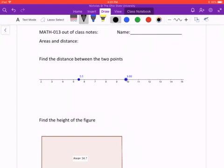So we're going to take the largest value, 9.86, and we're going to subtract that from the small value, which is 5.5. And when I do that, 9.86 minus 5.5 is 4.36.